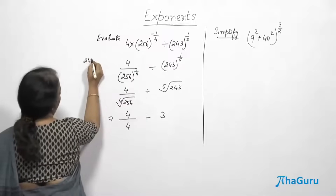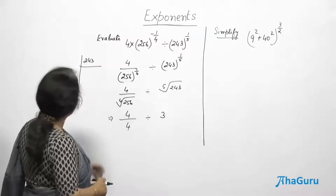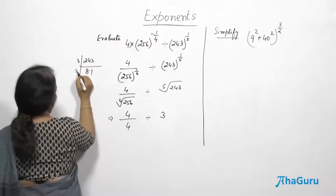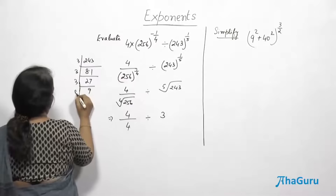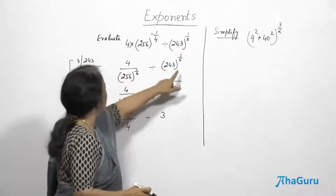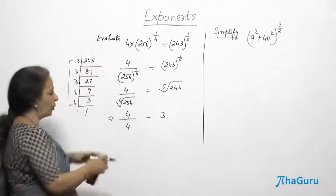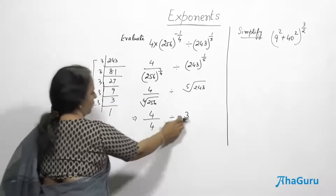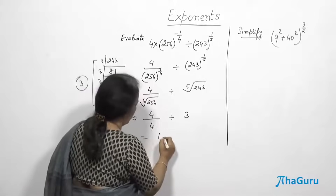Let me do the prime factorization of 243. Starting with 3: 243 ÷ 3 = 81, then 27, then 9, then 3, then 1 — a set of five 3s. Since the root is the 5th root, a set of 5 numbers means we take out one 3. So the 5th root of 243 is 3. Therefore 4/4 divided by 3 = 1/3. That is the final answer.